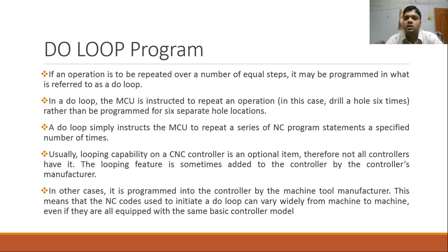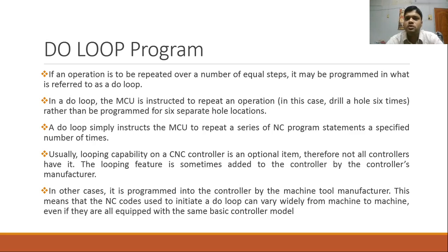If I have to drill a number of holes, it is always preferred to use the canned cycle mode of the CNC machine for that operation. In canned cycle mode, since it is a modal command — G81, the drilling canned cycle on a milling machine center — the tool repeats its Z axis motion. We write the repeat motion in one block of instruction, which is the canned cycle instruction, and whenever we supply a change of coordinate, the tool repeats the Z axis motion.